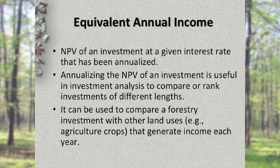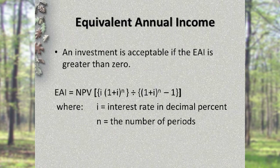Another useful investment formula is Equivalent Annual Income, or EAI. It's the net present value of an investment at a given interest rate that has been annualized. Annualizing the NPV investment is useful to compare or rank investments of different lengths. It can also be used to compare a forestry investment with other land uses, such as agricultural crops that generate income each year. The inputs to the EAI formula are the NPV value of the investment, your discount rate, and the number of periods — the number of years to reach the final harvest age.